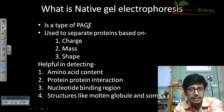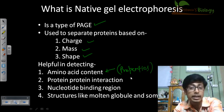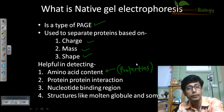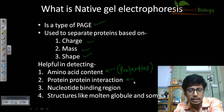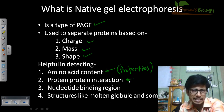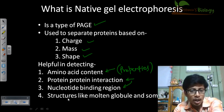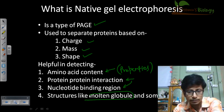It is a type of PAGE used to separate protein based on charge, mass, and shape. This is helpful in detecting different things like amino acid content — whether the protein consists of more hydrophobic or hydrophilic amino acids. Protein-protein interaction studies are also possible by native gel electrophoresis, as well as protein-nucleotide interactions — whether there is any region of DNA that the protein can bind. Different domains inside the protein can have unique structures that bind with DNA or RNA. We can also study molten globule structures and different motif structures of proteins using native gel electrophoresis.